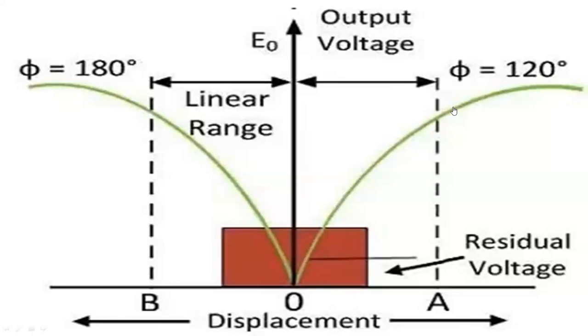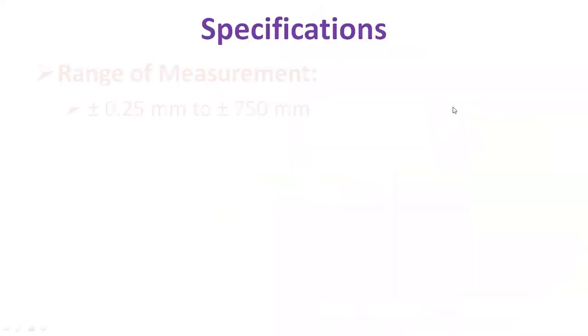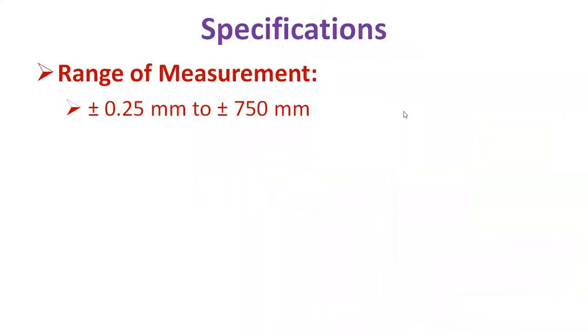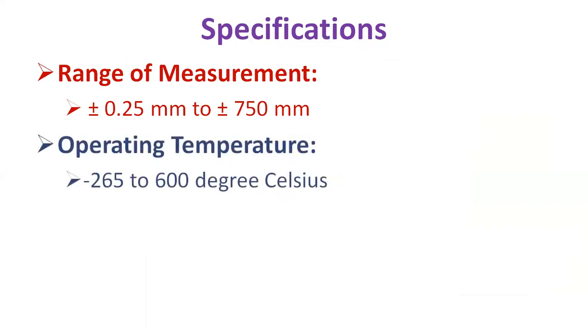The specifications of LVDT: the range of measurement is approximately of the order of plus or minus 0.25 millimeters to plus or minus 750 millimeters. The operating temperature is minus 265 to 600 degrees Celsius, and the frequency range is 50 Hertz to 20 kilohertz.